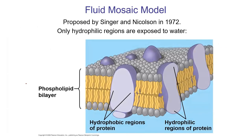Let's talk about membrane models. The main model is called the fluid mosaic model, which has been around since the 1970s. The two key words are fluid — referring to the phospholipids — and mosaic — referring to the proteins. You can think of it as an ocean or sea of phospholipids that are somewhat fluid, like thick salad dressing. The mosaic part is this scattering of proteins found embedded in the phospholipids, like icebergs in an ocean — they can float around.